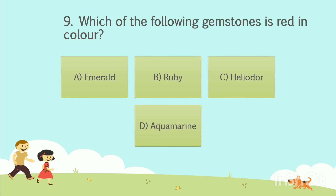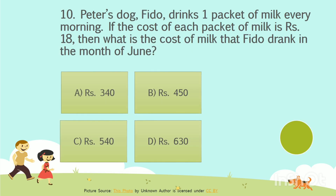The answer is Option B: Ruby. Question number 10. Peter's dog, Fido, drinks one packet of milk every morning. If the cost of each packet of milk is 18 rupees, then what is the cost of milk that Fido drank in the month of June? Option A: 340 rupees. Option B: 450 rupees. Option C: 540 rupees. Option D: 630 rupees. Your time starts now.